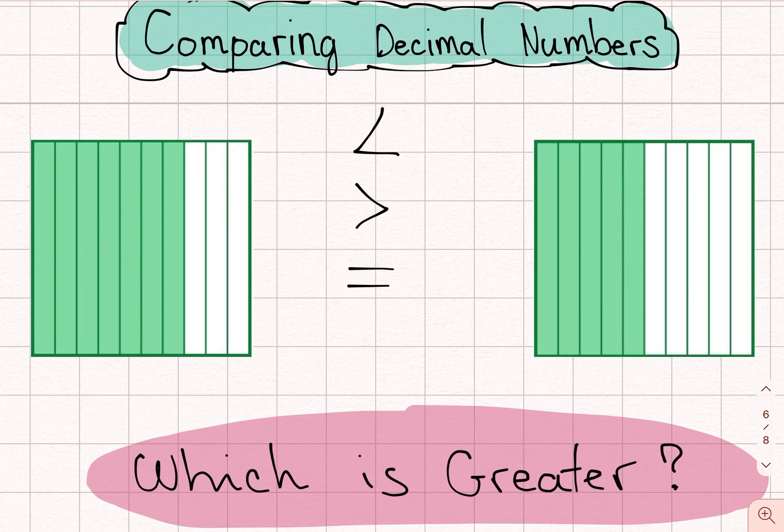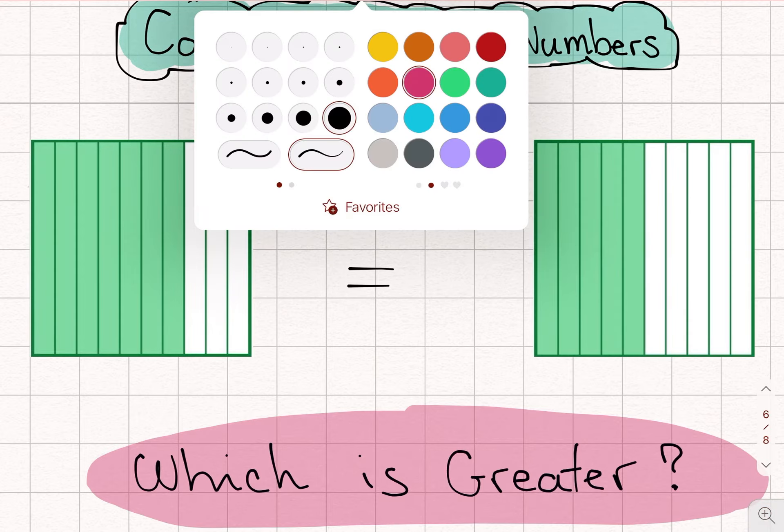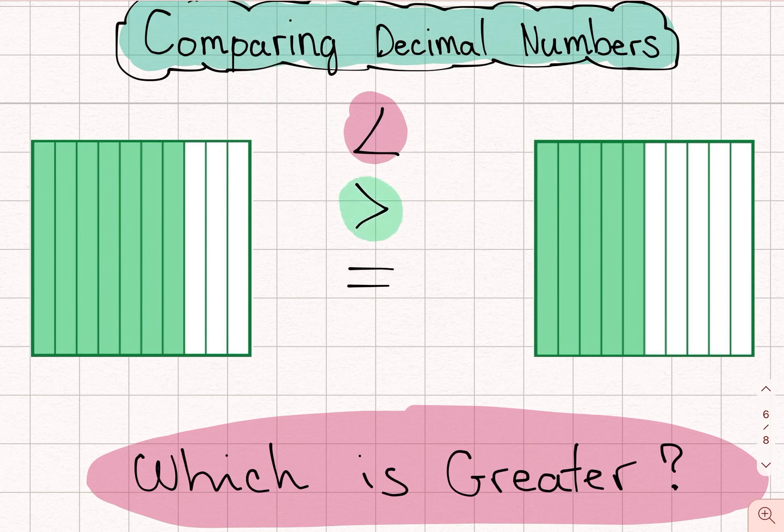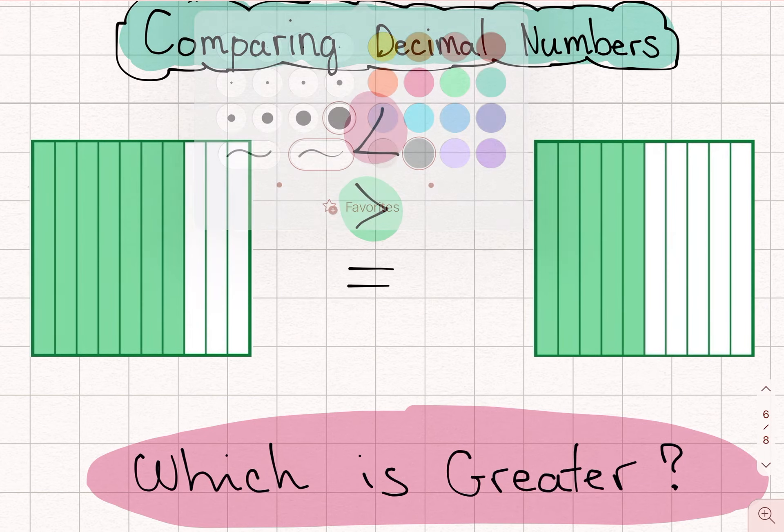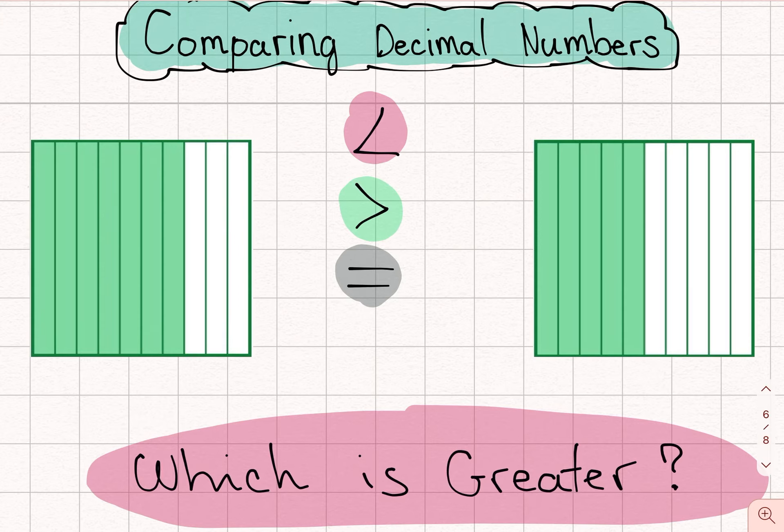So we want to know which of these three signs should we use for these two decimal numbers here. Which one is greater and which one is less? So anytime we are comparing decimal numbers, we're going to start by looking at what fraction they're divided into. So this one here is divided into 1, 2, 3, 4, 5, 6, 7, 8, 9, 10. These are tenths.